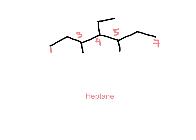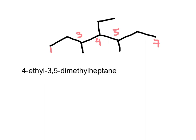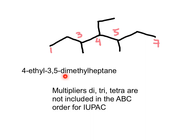This is a substituted heptane. No matter which direction we number, we find a methyl group on position three and an ethyl group on position four, and methyl groups on positions three and five — so we use the multiplier 'dimethyl' and also a four-ethyl substituent. When writing the name we follow alphabetical order. The full name is 4-ethyl-3,5-dimethylheptane. Observe that 'di' is not used as part of the alphabetical ordering.